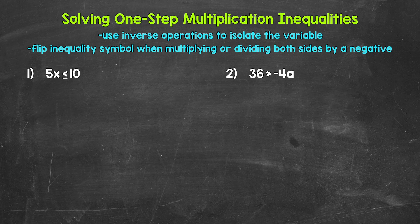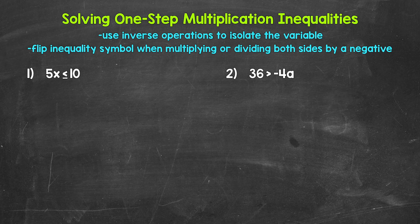When we solve inequalities, we want to isolate the variable — get it by itself on one side of the inequality. We do that by using inverse operations. So this is very similar to when we solve equations. One thing we need to be aware of when it comes to inequalities: we flip the inequality symbol when multiplying or dividing both sides by a negative. And we will talk more about this later in the video.